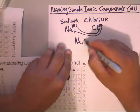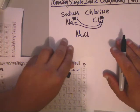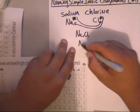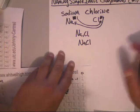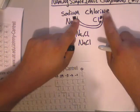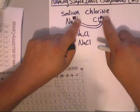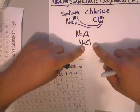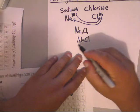You end up getting Na₁Cl₁. That looks silly written that way — it's actually just NaCl. If the numbers match, you don't ever have to write them. For example, if it were positive two and negative two, or positive four and negative four, the numbers cancel out and you're just left with Na and Cl.